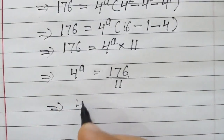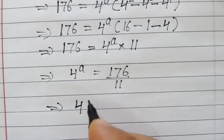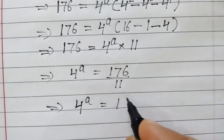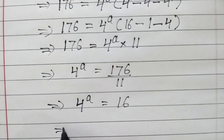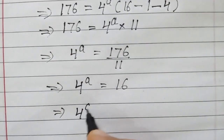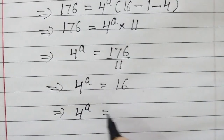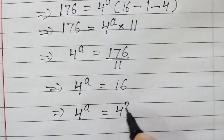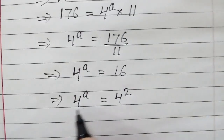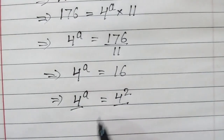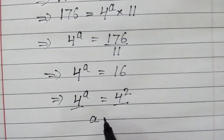4 to the power a will be equal to 16, or 4 to the power a is equal to 4 squared. Since the base is the same, the powers will be equal. So a is equal to 2.